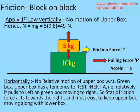Looking at the 2D sketch, it will help us make a free body diagram. First we tackle the vertical direction. There is no motion in the vertical direction, so we apply Newton's first law: for the upper box, its weight downwards is balanced by the normal reaction upwards. So the normal reaction on the upper box is N = Mg = 5 × 9.8 = 49 Newtons.